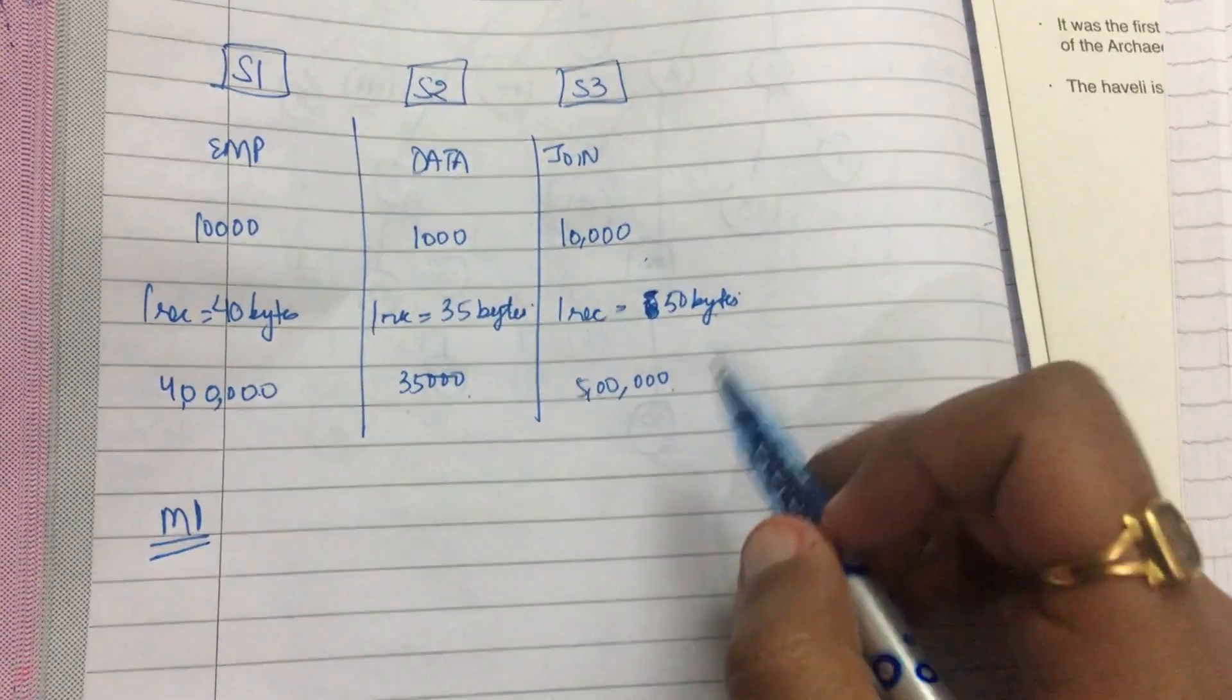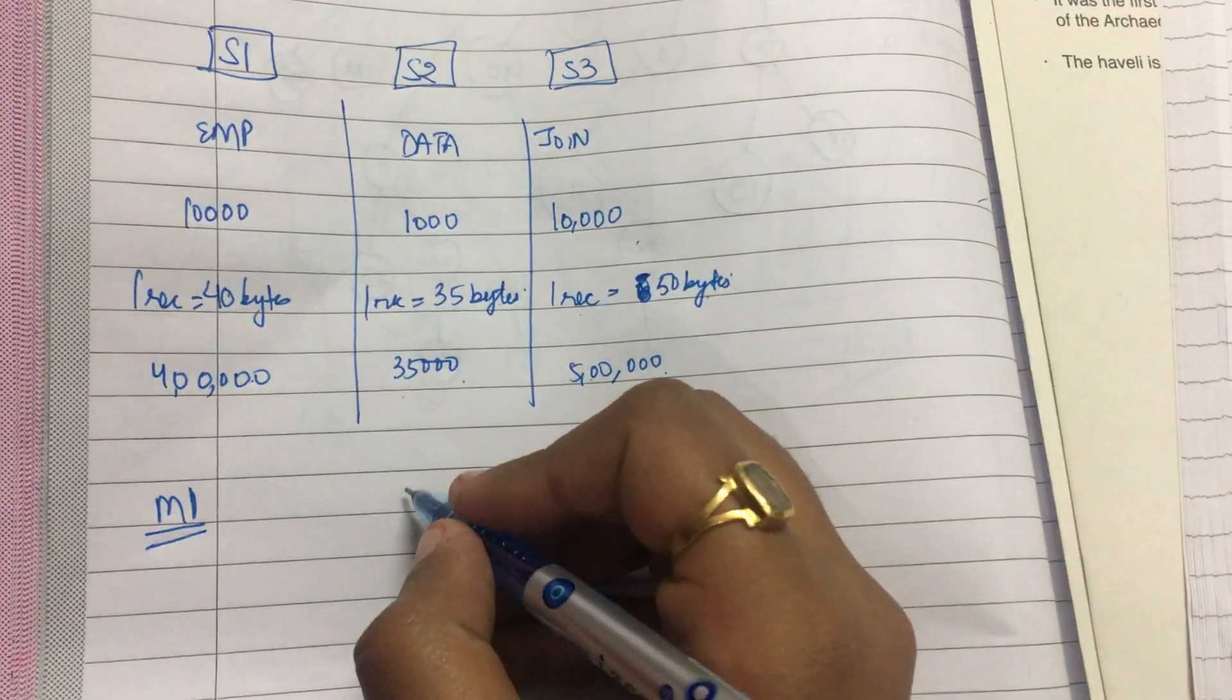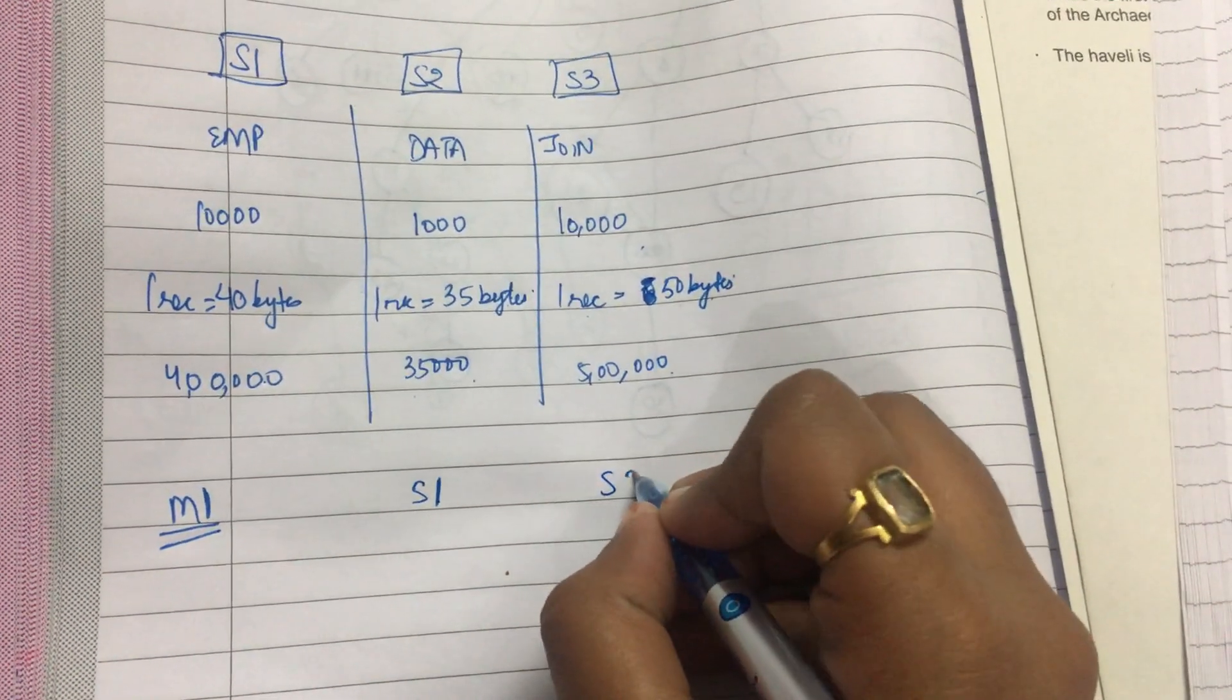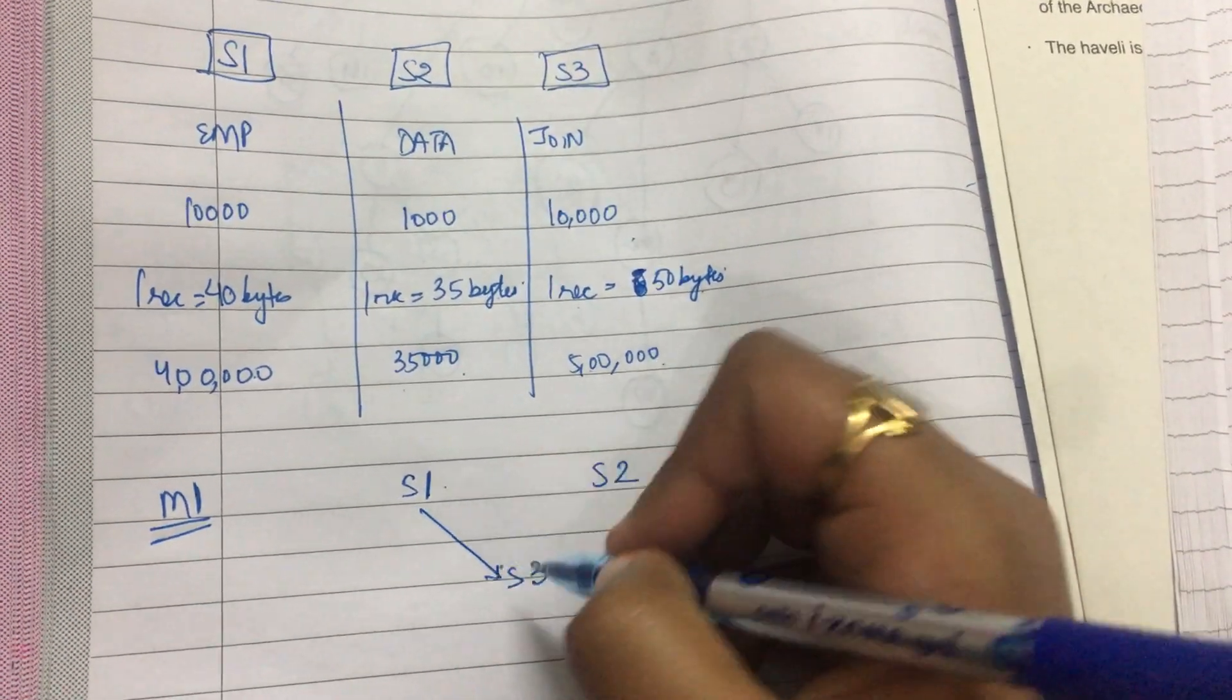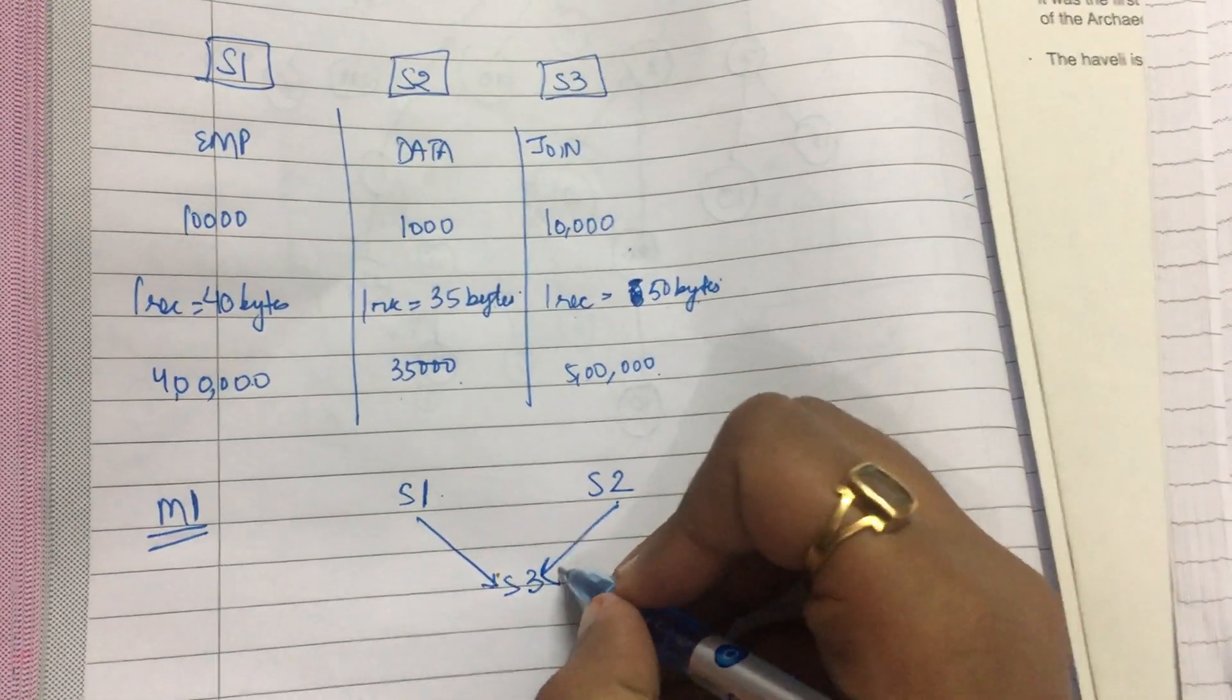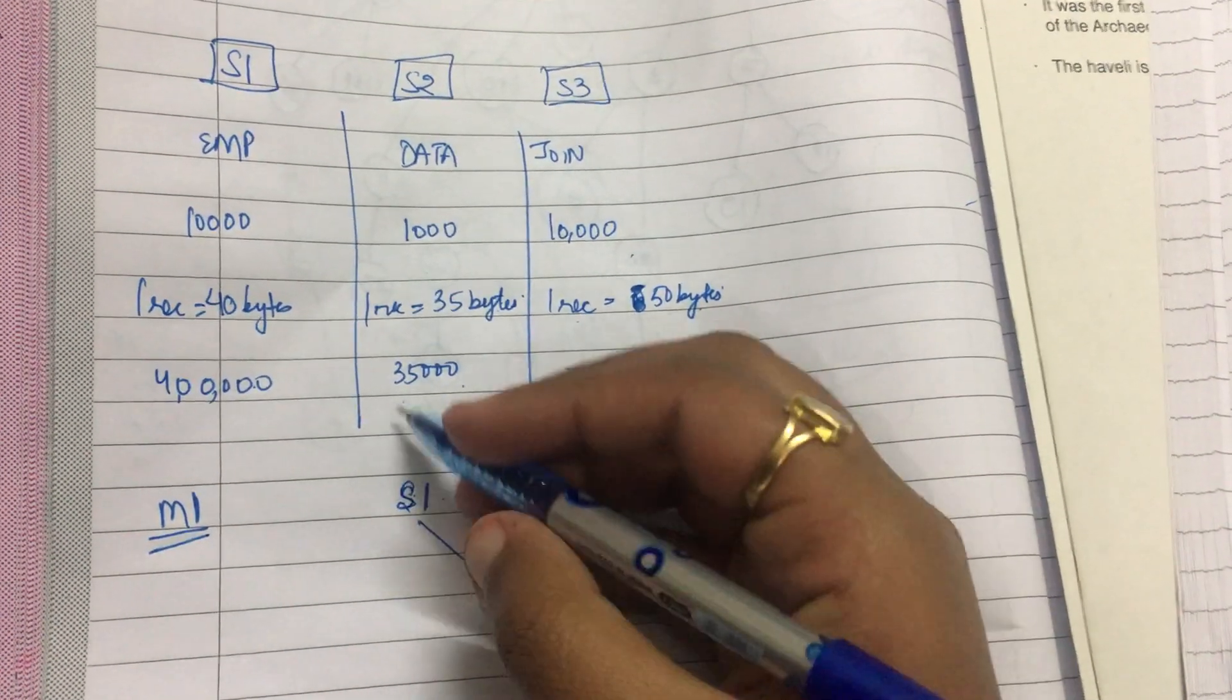So now there are three ways in which I can process a query. Suppose from my state S1, I have these three states S1, S2, S3. I directly send data from S1 to S3 and I directly send data from S2 to S3. So when I send data from S1 to S3, how much data